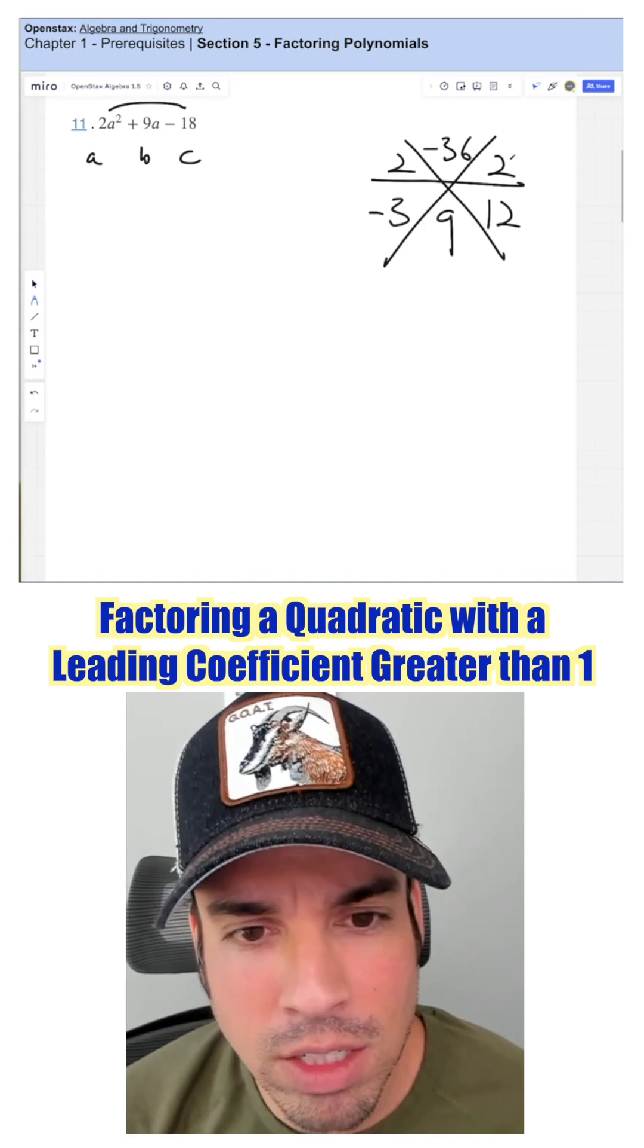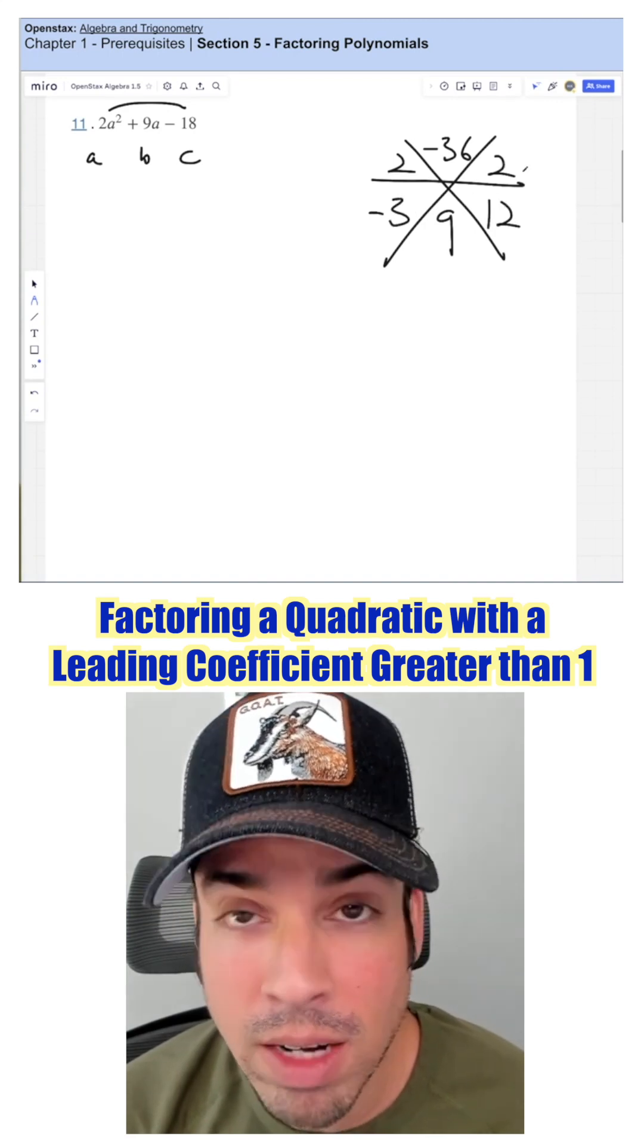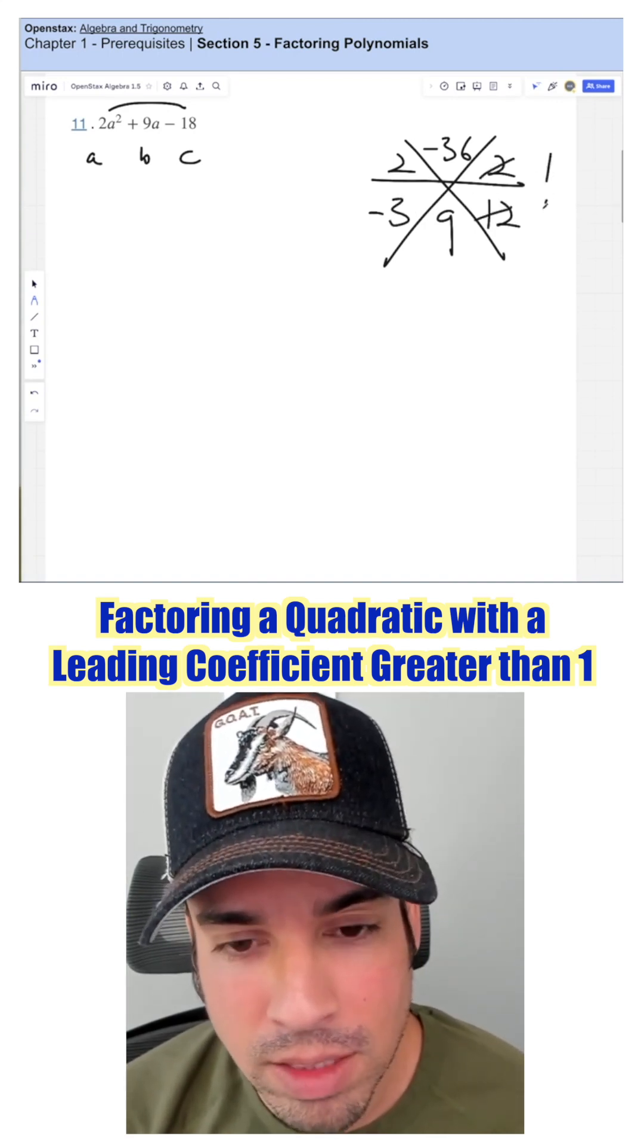Then I'm going to reduce these if possible. I can reduce the 2 and the 12, divide them both by 2. And I've got 1 and 6.